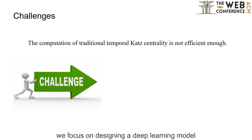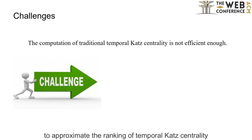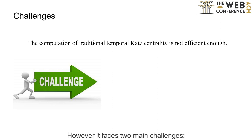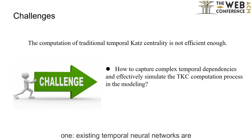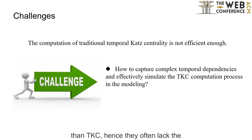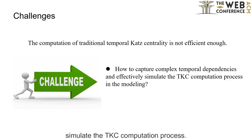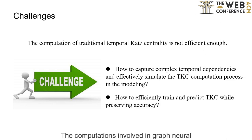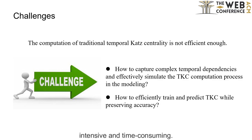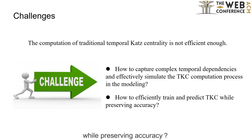We focus on designing a deep learning model to approximate the ranking of temporal Katz centrality. However, it faces two main challenges. One, existing temporal neural networks are mostly tailored for specific tasks other than TKC, hence they often lack the capability to effectively and efficiently simulate the TKC computation process. Two, the computations involved in graph neural networks, GNNs, can be computationally intensive and time-consuming. How to efficiently train and predict TKC while preserving accuracy?